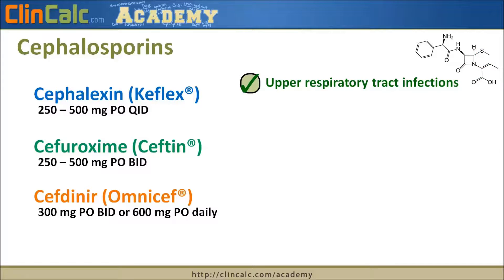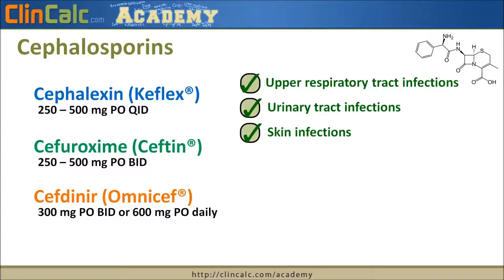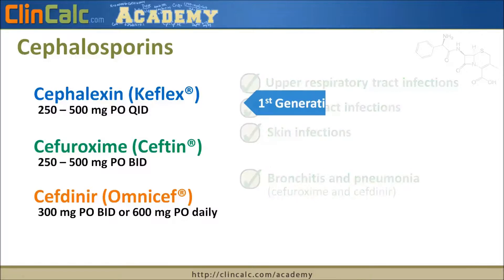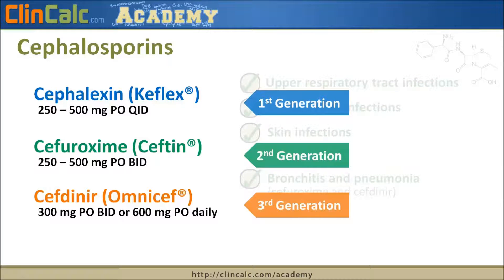The spectrum of these cephalosporins varies, but in general they're used for upper respiratory tract infections, urinary tract infections, skin infections, bronchitis and pneumonia — though bronchitis and pneumonia coverage is really only for the latter two, cefuroxime and cefdinir. There are different generations: cephalexin is a first-generation cephalosporin, cefuroxime is second-generation, and cefdinir is a third-generation cephalosporin. As we go to a higher generation, we typically get better gram-negative coverage.